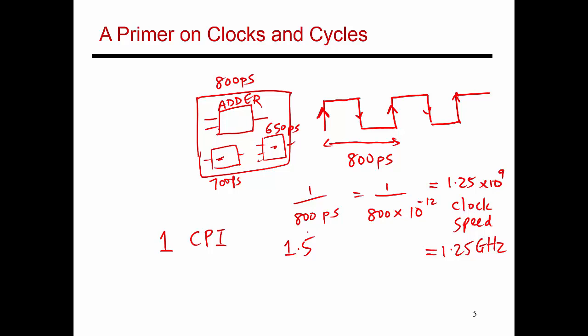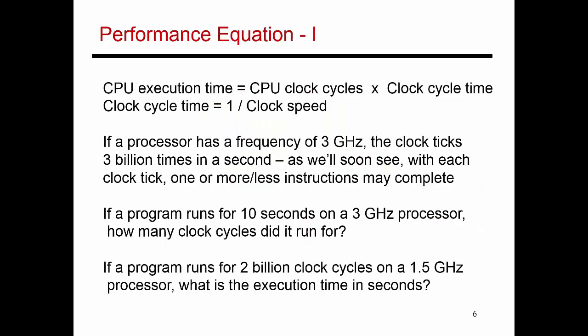So with these basics on cycle times and clock speeds, let's look at the next set of performance equations. So essentially, the time that a program takes to finish is a function of the number of clock cycles that program needs and the length of each clock cycle, which is the clock cycle time.